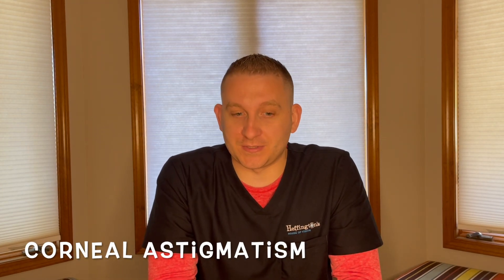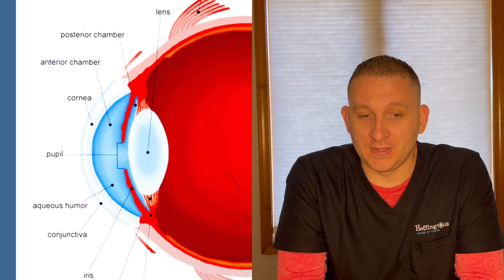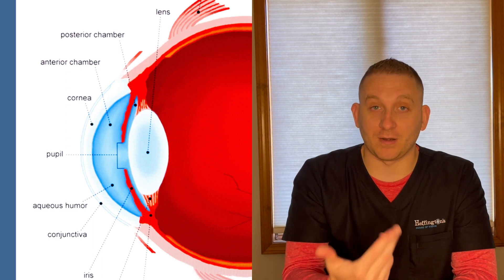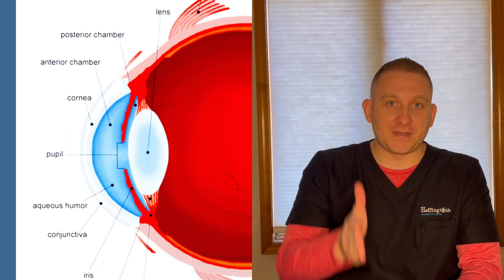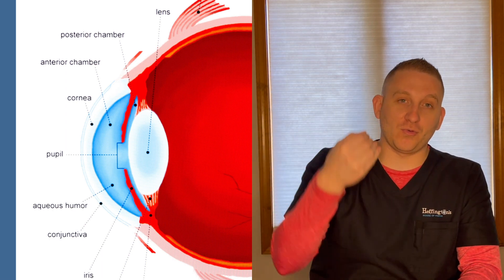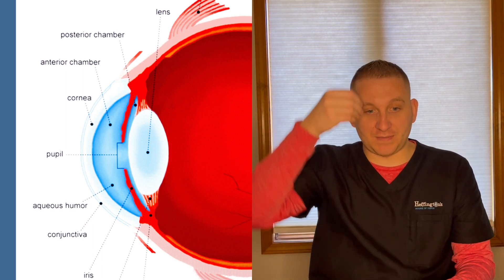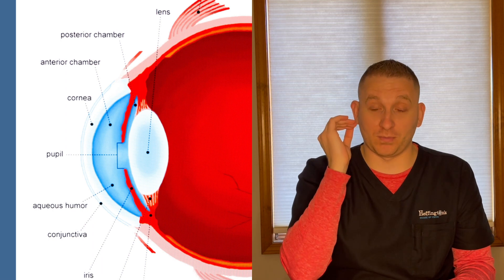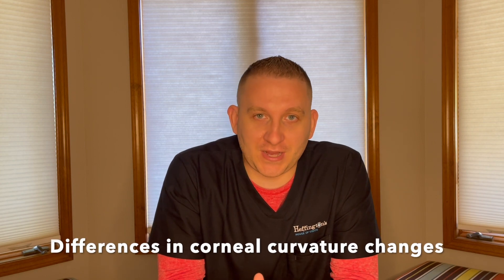Let's talk about corneal astigmatism, involving the cornea, the front image here. What happens in corneal astigmatism is that the curvature is not the same all the way around the cornea and is not perfectly spherical on a microscopic scale. In some patients' cases, this can mean that vertically up and down on the cornea it's a little more steep or a little more flat in curvature compared to horizontal curvature. It's a difference in curvature — that's one form of astigmatism.